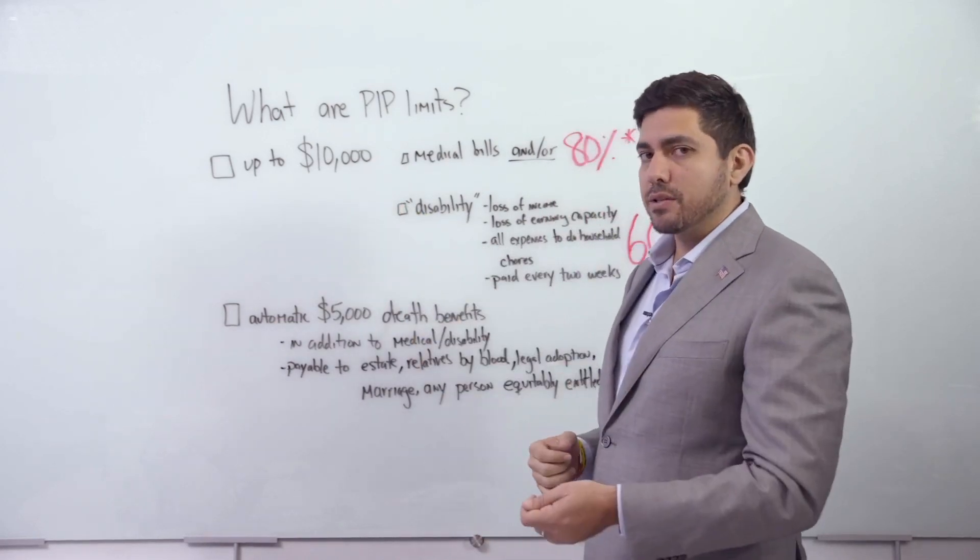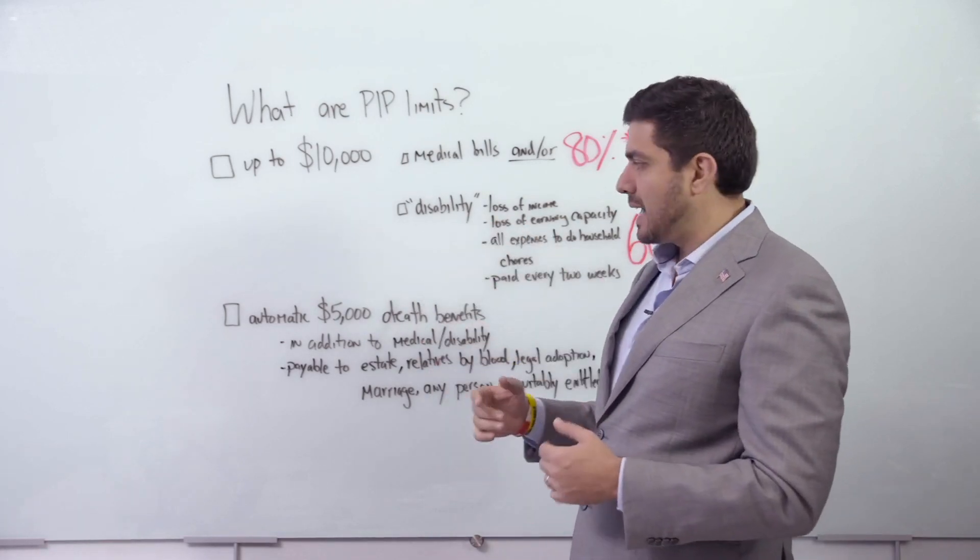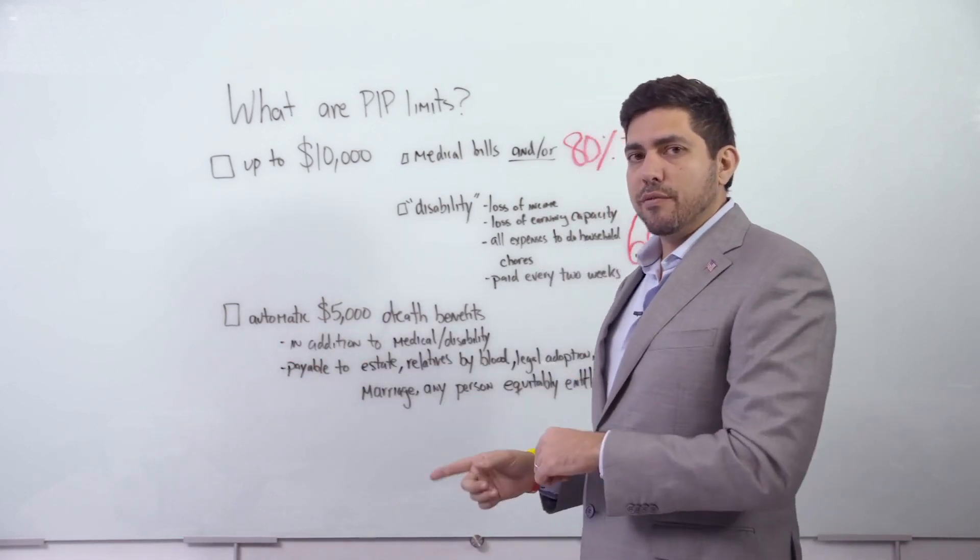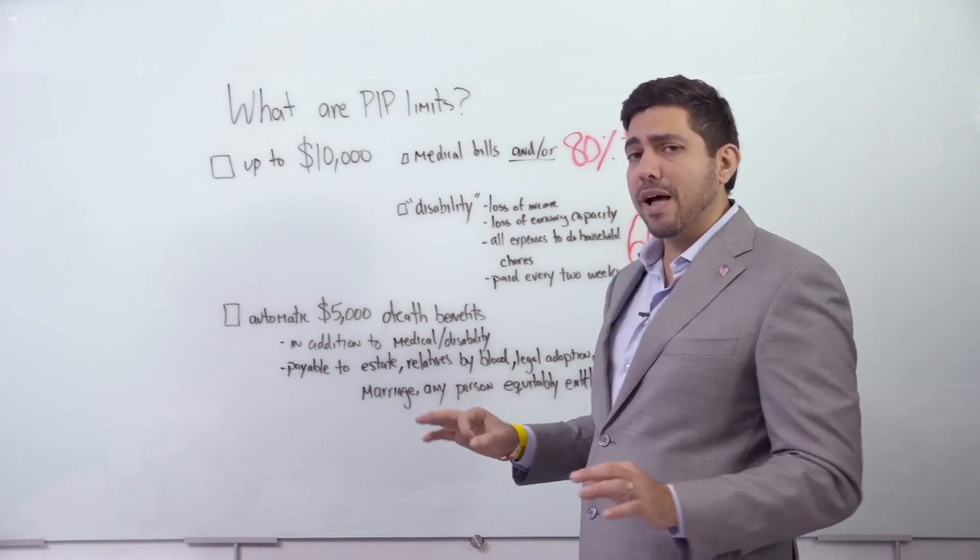You have to get $10,000 in medical bills and loss of income to reach that $10,000 limit. But this is an automatic $5,000. You send the death certificate with a letter stating who to make the check payable to, and they should pay the whole $5,000.